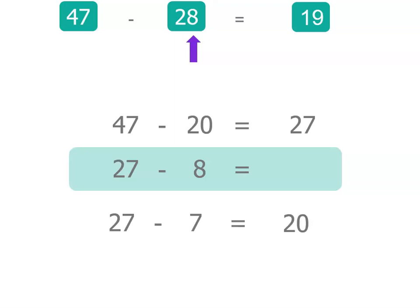And then we're going to take away one more because remember we're taking away 8 and we've only taken away 7 so far. So we've got 20 take away 1 or subtract 1 equals 19.